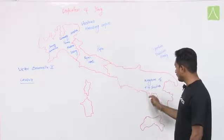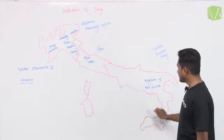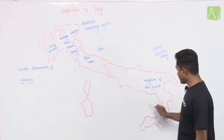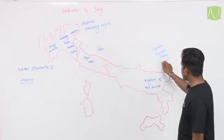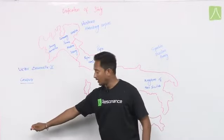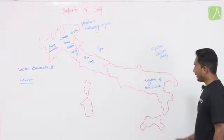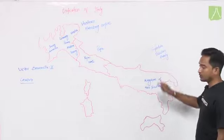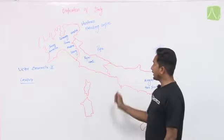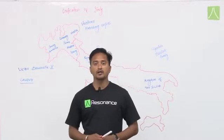If you look at the southernmost part of Italy, both the southern parts are called Sicily, and that's why we call it the Kingdom of Two Sicilies. This Kingdom of Two Sicilies belonged to the Spanish Bourbon family. With the help of his Navy, Spain captured this part of Italy, which was ruled by the Bourbon dynasty of Spain.